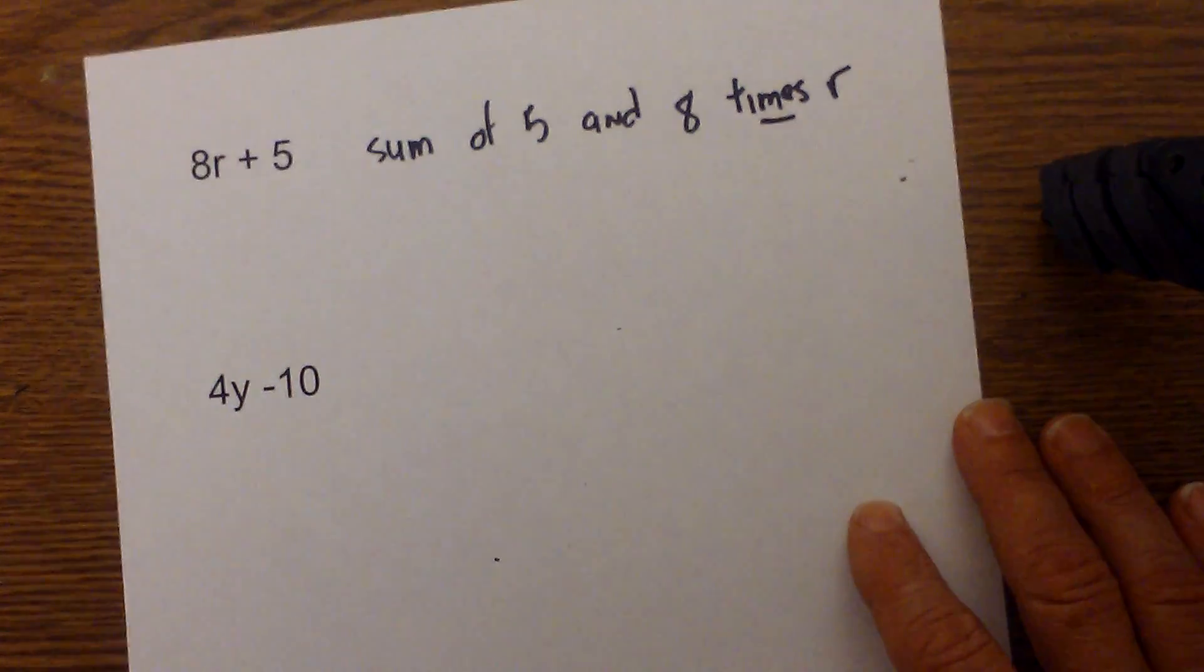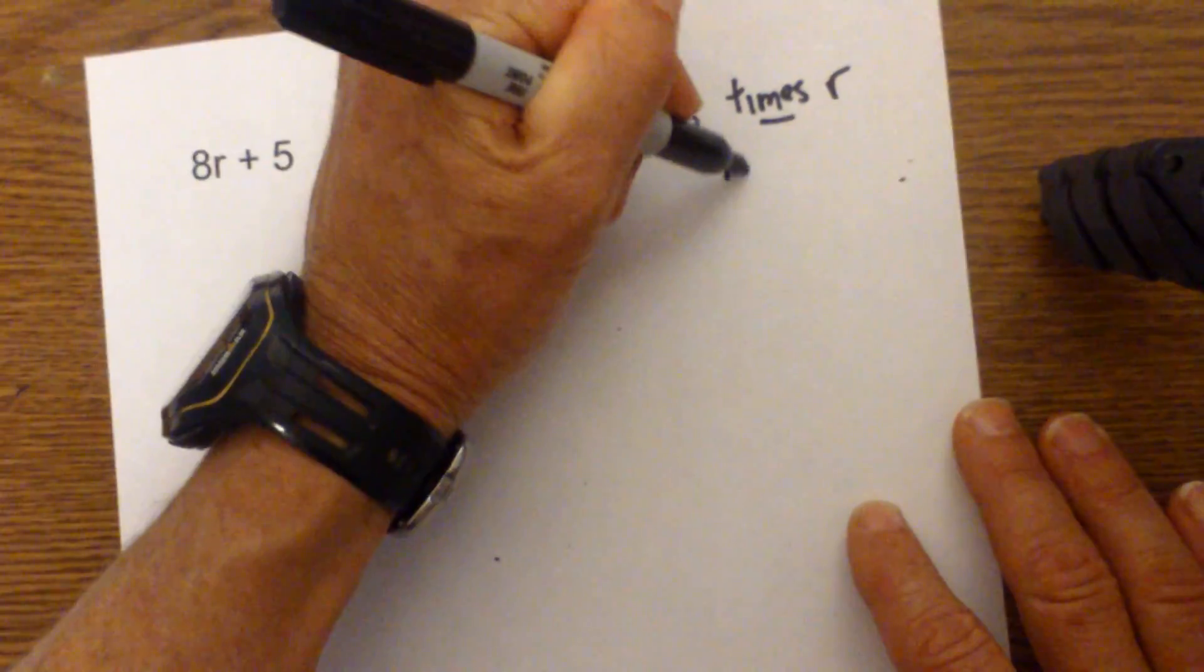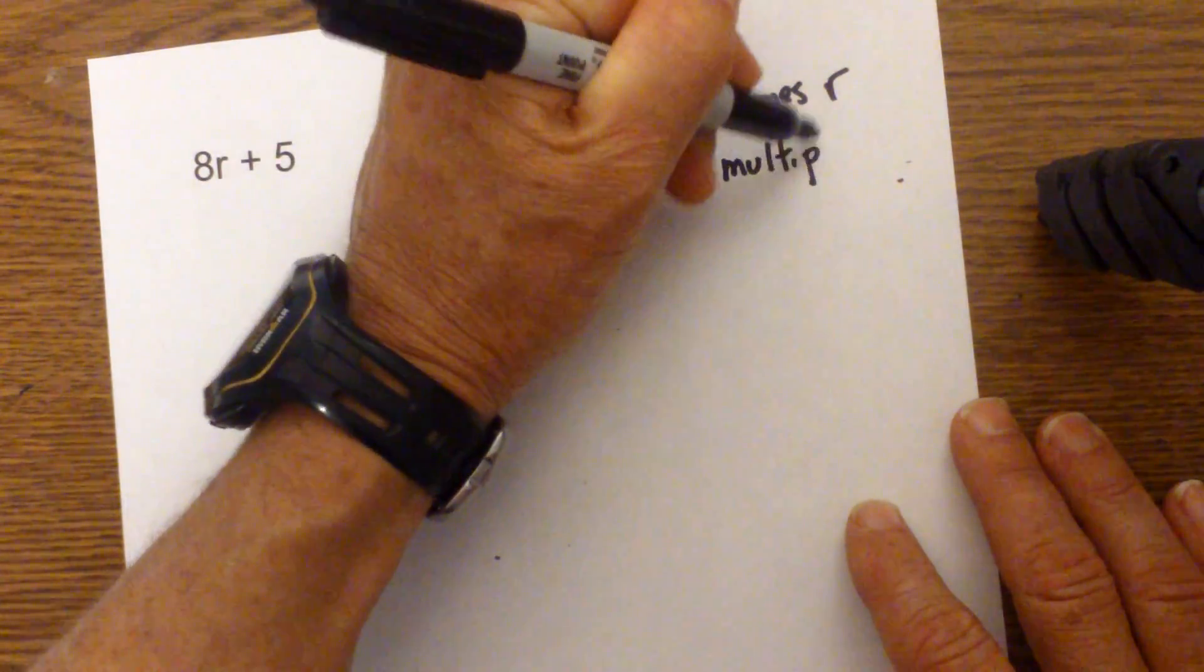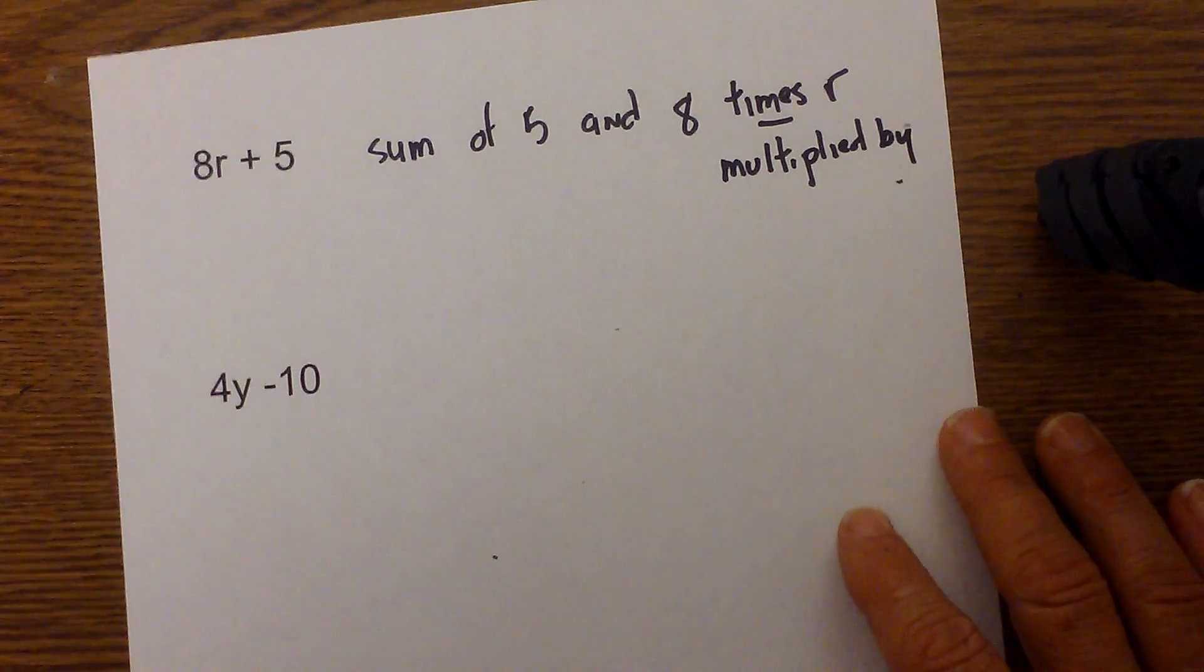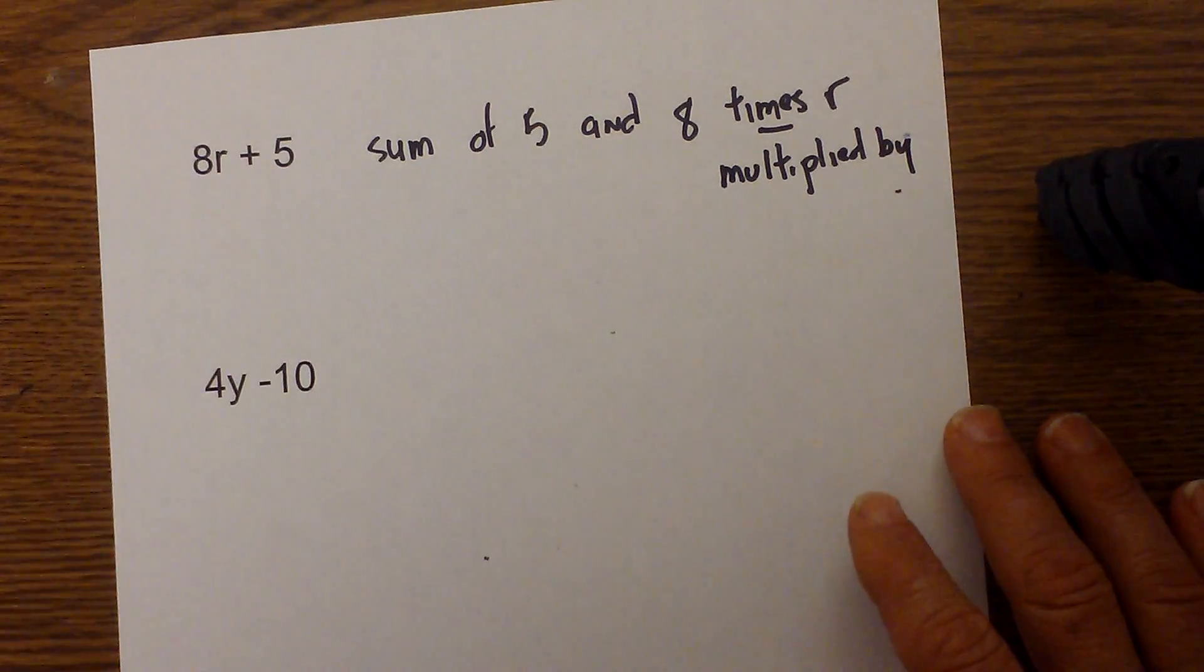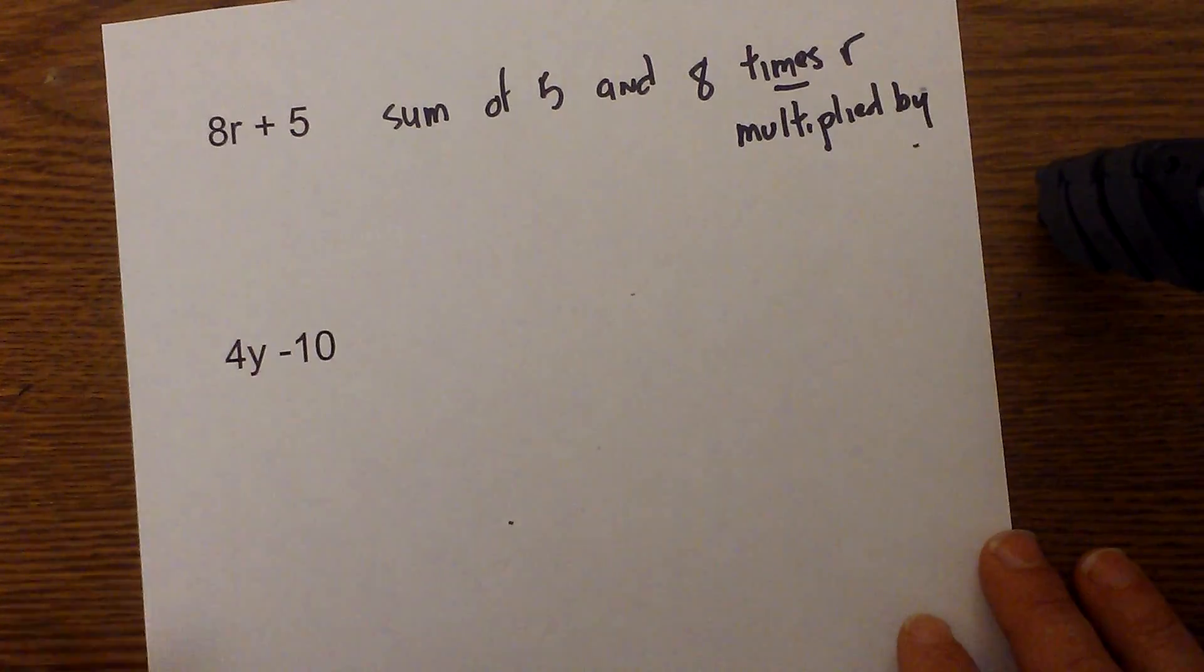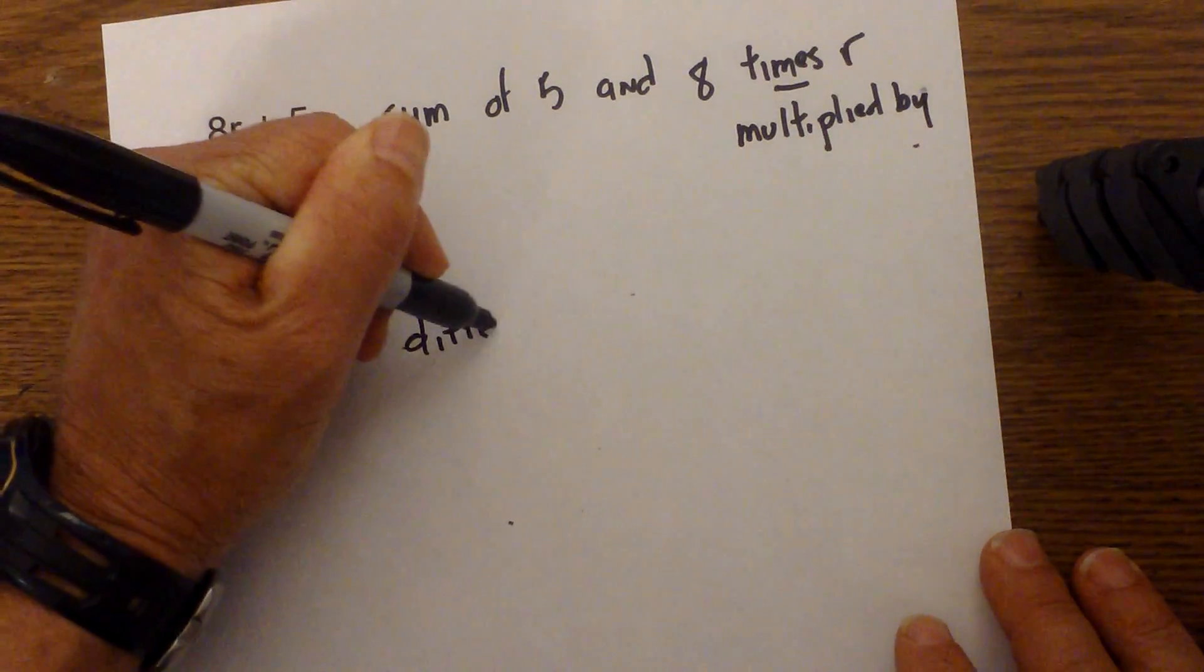And if you don't like the word times, you could use multiplied, multiplied by r, or any of these terms that represent multiplication, because eight times r, that's multiplication. And finally the last one, subtraction, I'm going to use the word difference.